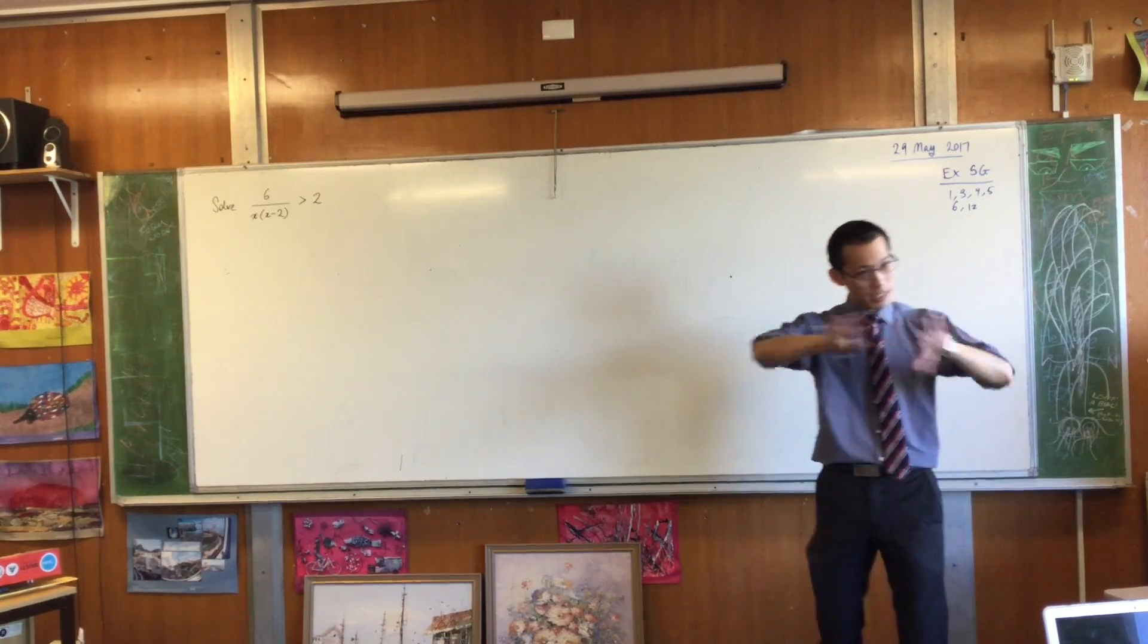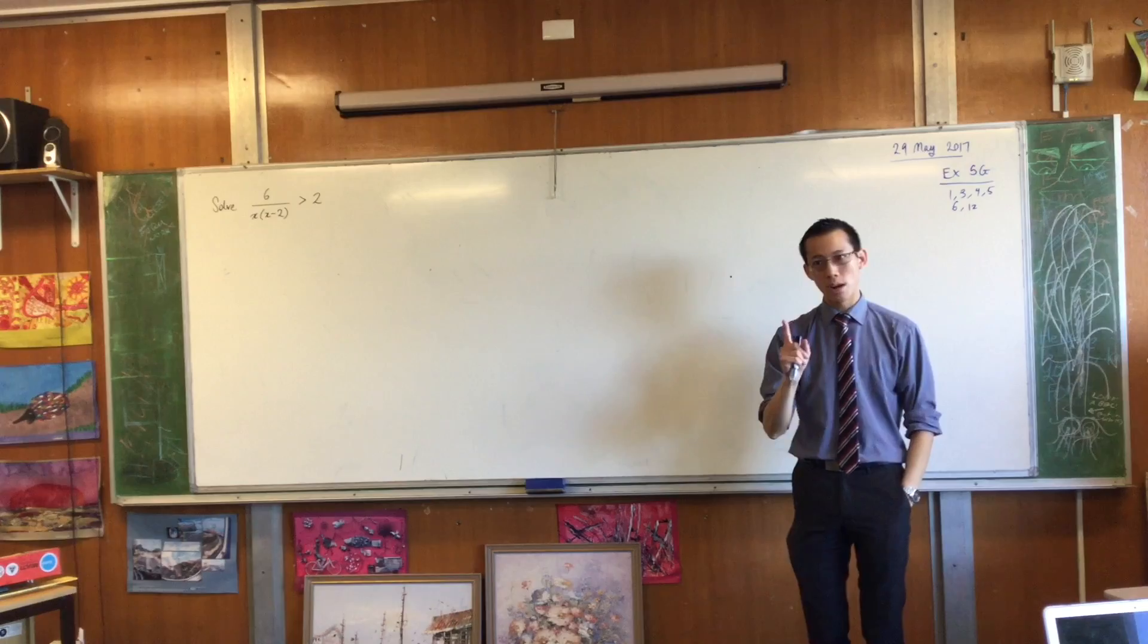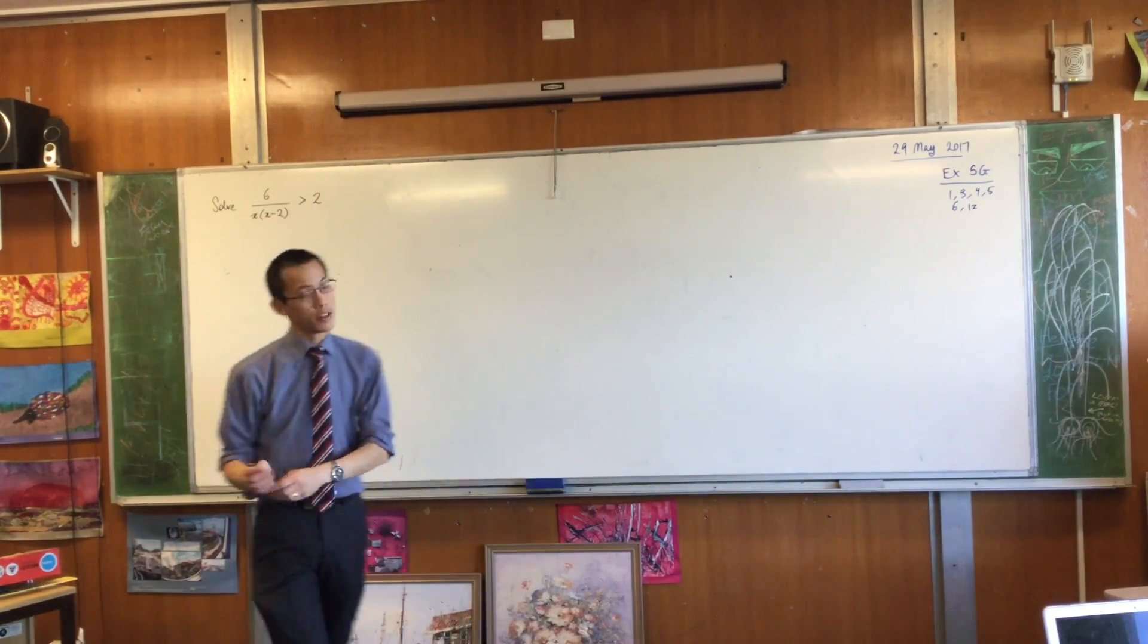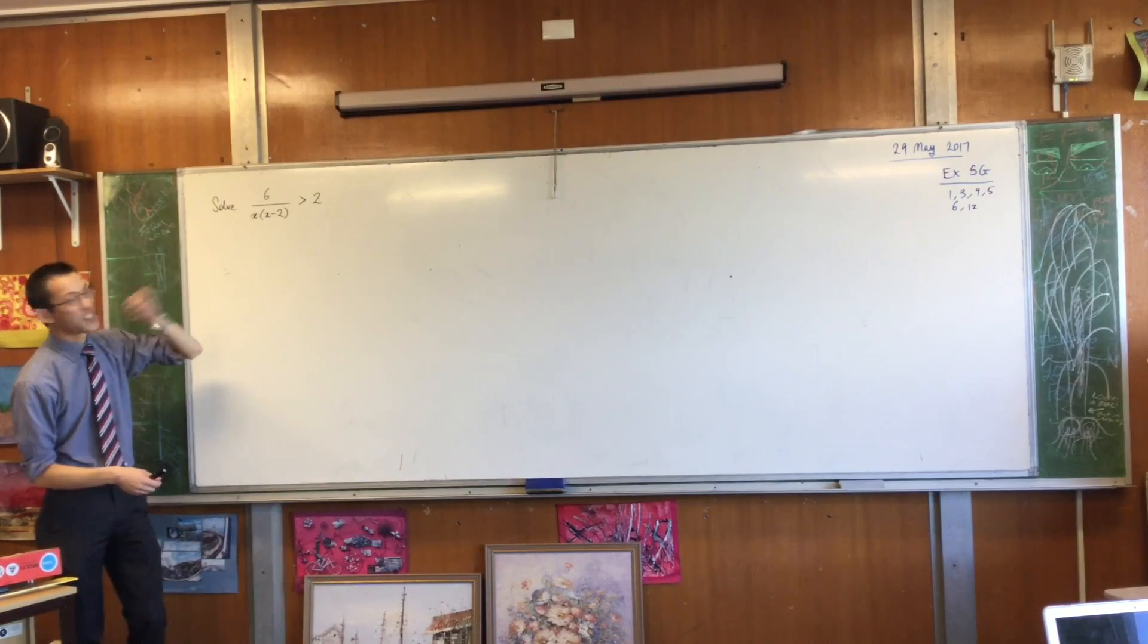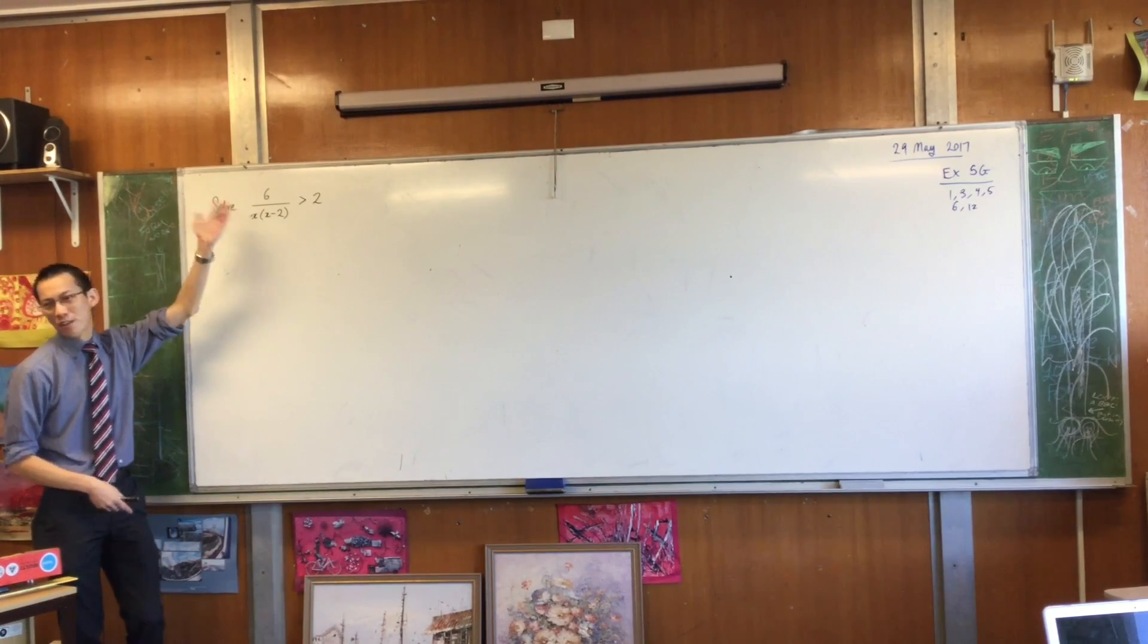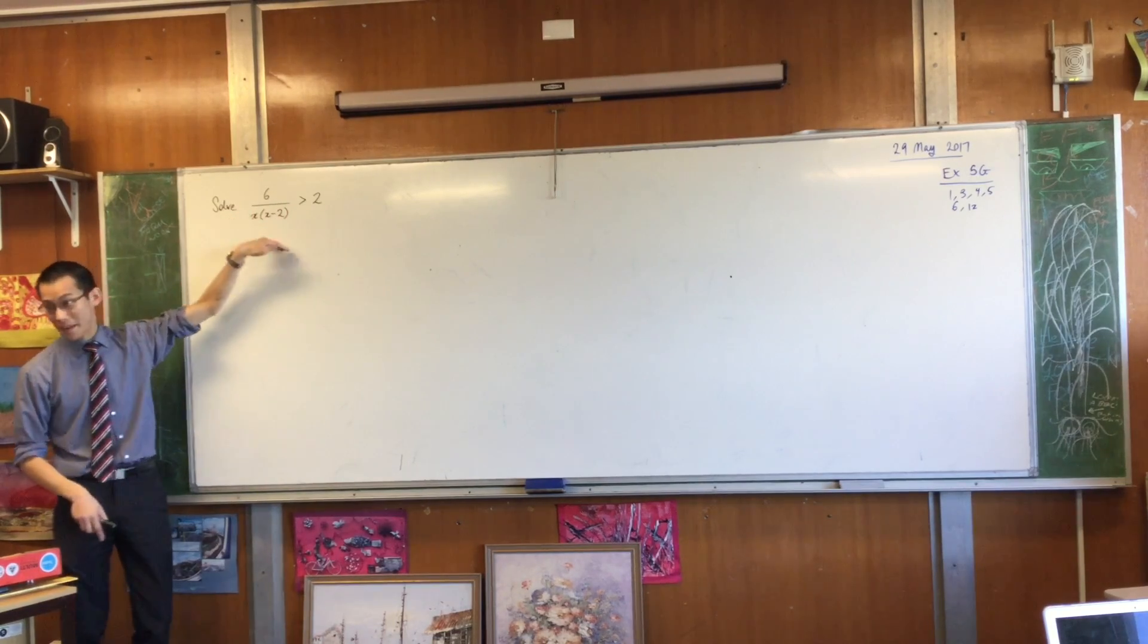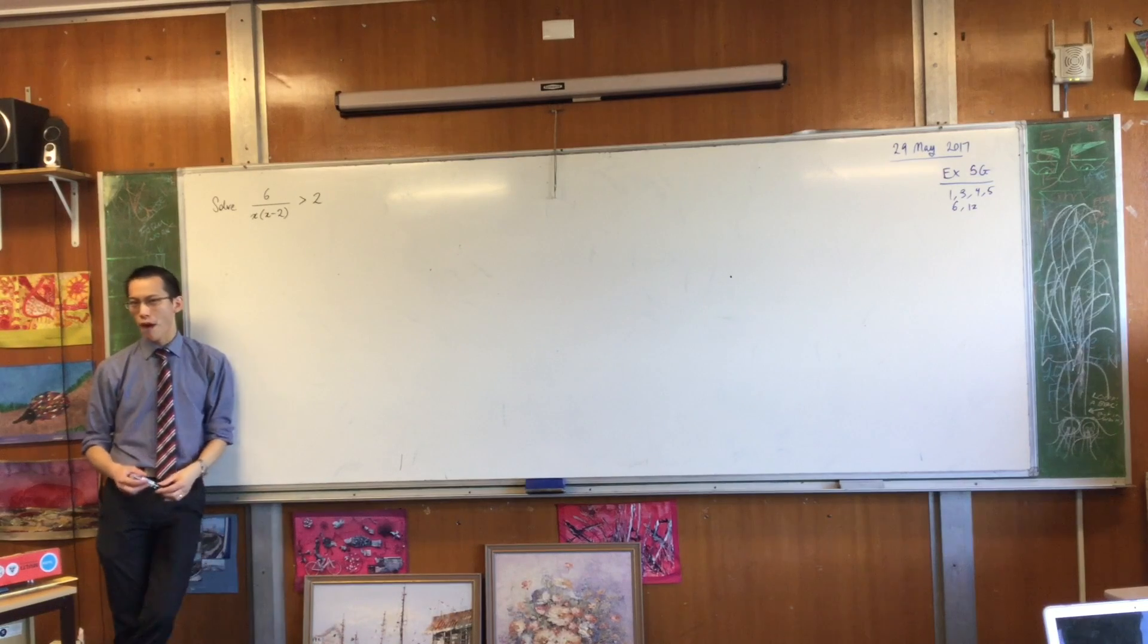Now there are two ways, two distinct ways at least that you can do this question. I'm just going to show you one of them, the most likely that at this point in the course you would use for this, which is to look at this inequality and to say there's a fraction. Gross. I don't like dealing with fractions here, especially when the fraction involves your variables on the denominator. That's a bit of a disaster. So how do I get rid of this fraction?